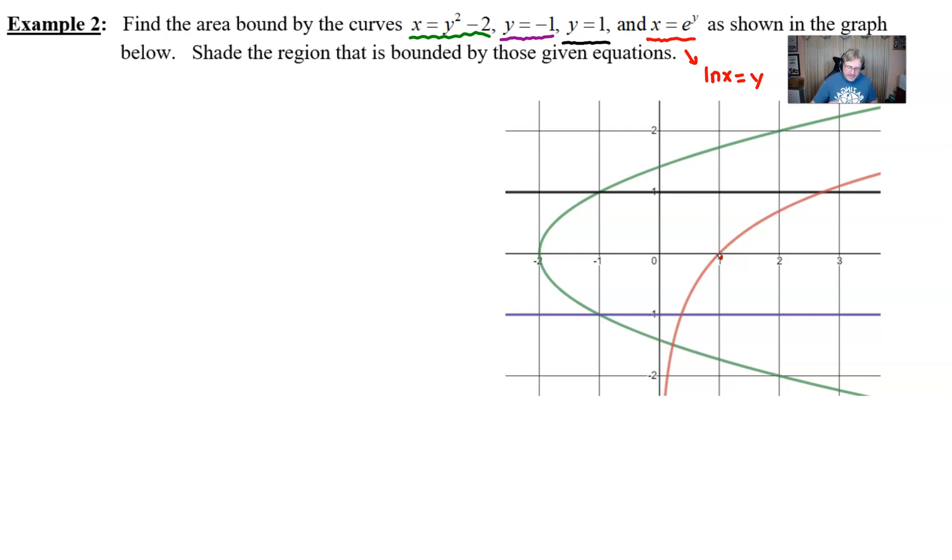So those are our shapes. Our bounded region probably needs to be colored in because there's a lot going on. The region defined by all four of those equations is going to look like that.